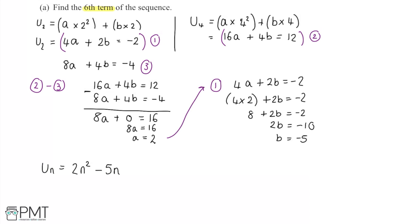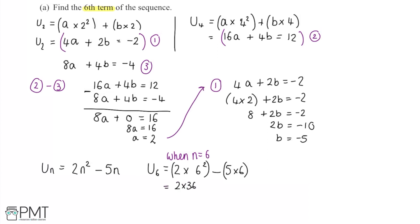Now we want the sixth term, when n equals 6. Substituting into u6: 2 times 6 squared minus 5 times 6, which is 2 times 36 minus 30, giving 72 minus 30, which equals 42.